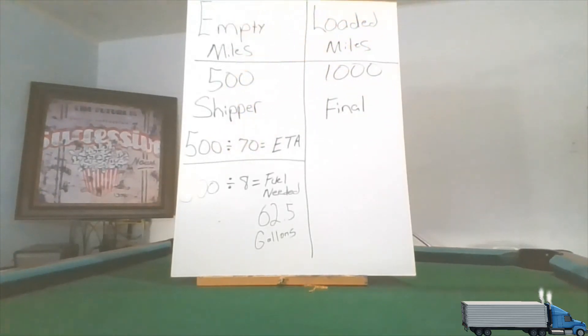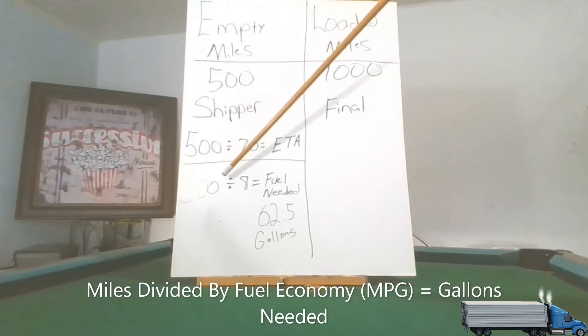So here are the miles that I'm attempting to drive today, which is 500. I said my truck is getting eight miles out of every gallon fuel. So I took the 500 miles that I'm going to be traveling divided by the fuel economy, which my fuel economy is eight, and it gives you the number of gallons of fuel that you will need to get these amount of miles done.